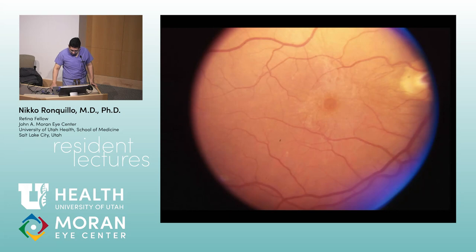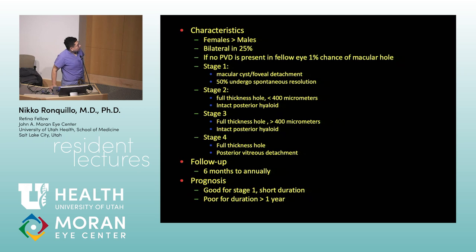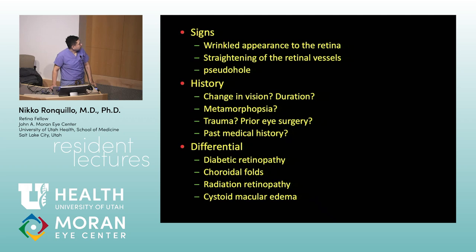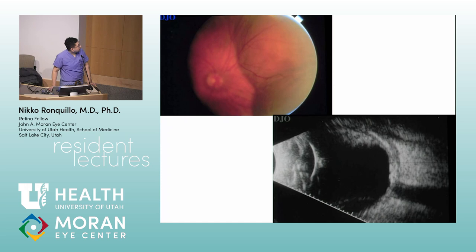Next — macular hole with ERM. Macular hole stages: stage 1 — do not do surgery, spontaneous resolution can occur. Stage 2 — full thickness hole, still small. Stage 3 — larger hole. Stage 4 — large hole with PVD. ERM is not asked about much in OCAPS, but clinically consider surgery when vision is 20/40 or there is significant metamorphopsia.